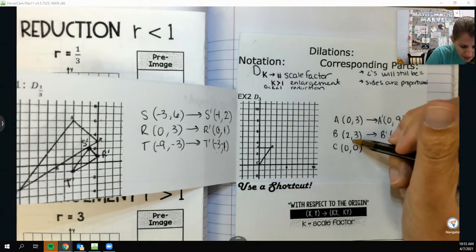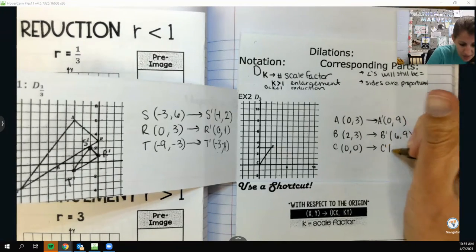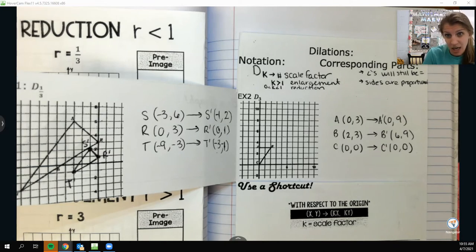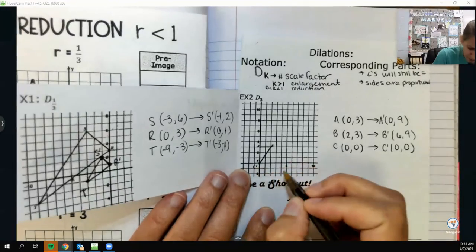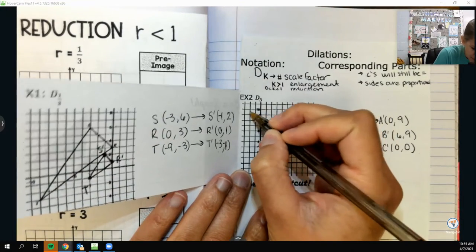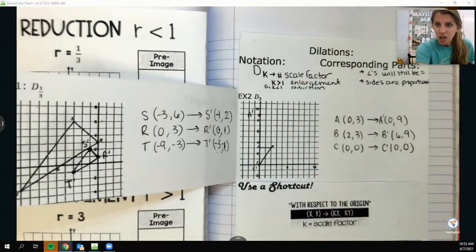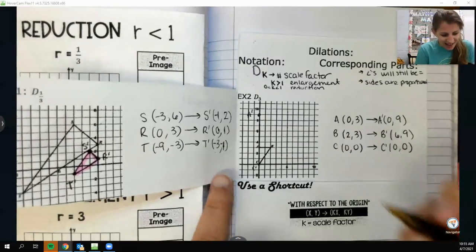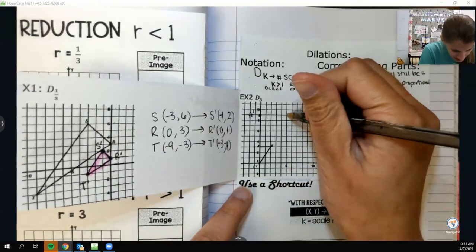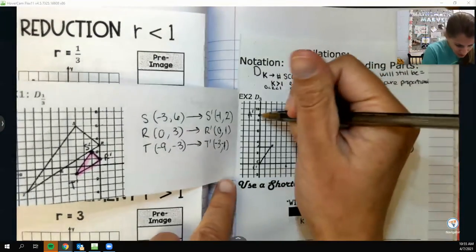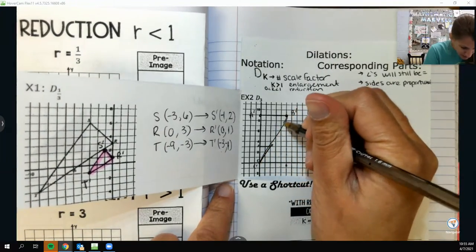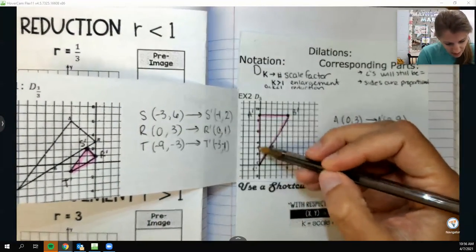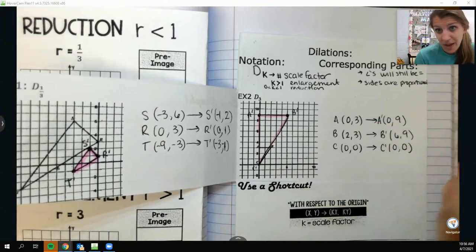All right, this next one here, I have triangle ABC. A is at 0 comma 3. B is at 2 comma 3. And C is at 0, 0. They are telling me to do a dilation of 3. So because it's bigger than 1, I know it's going to get bigger. It's going to be an enlargement. And so I'm just going to multiply everything by 3, that scale factor. Now 0 times 3 is still 0. And 3 times 3 is 9. And that's kind of because if you're going from the origin, 0 times anything is just going to be 0. So it's going to stay put. B prime, if I multiply it by 3, we're going to be at 6 comma 9. And then C prime is right on your dilation center. So it's going to stay put.